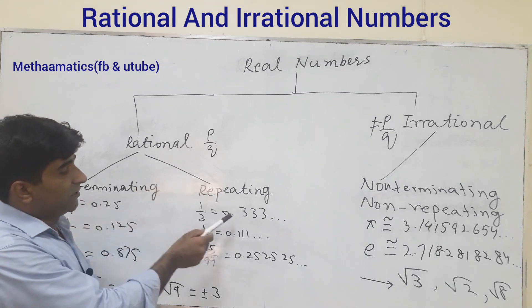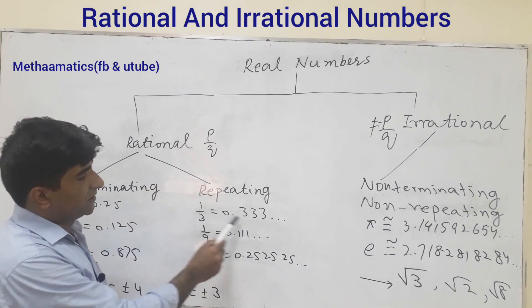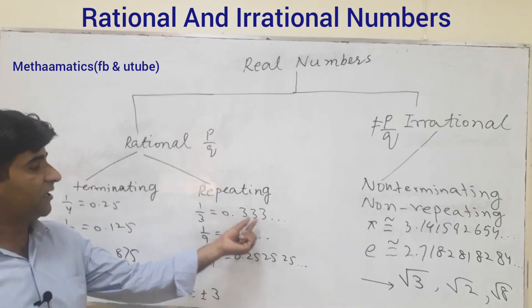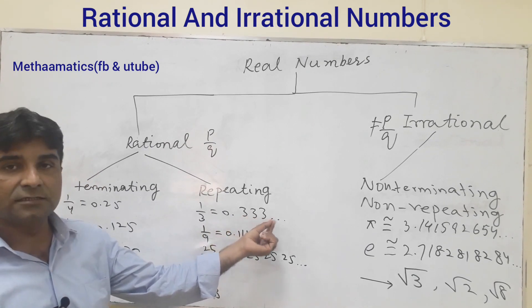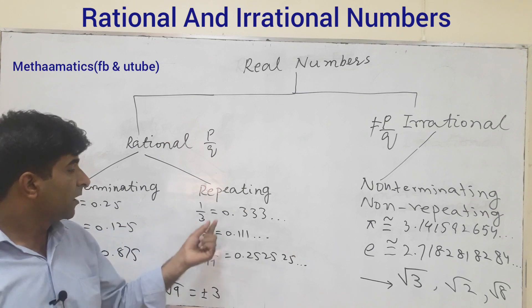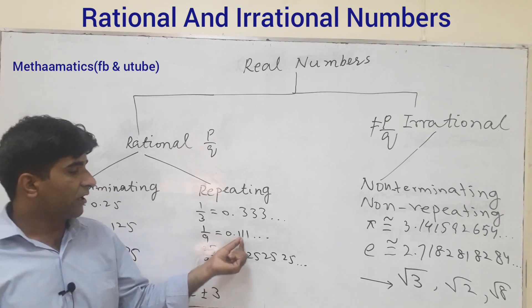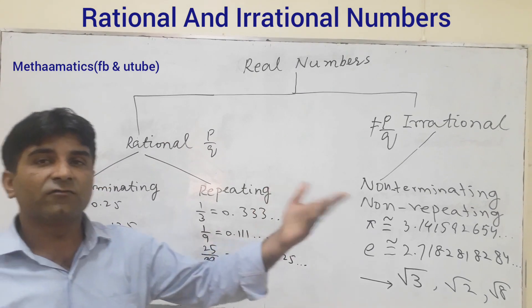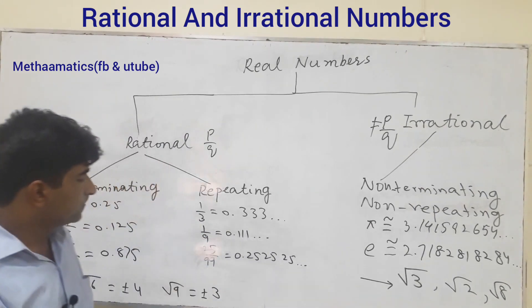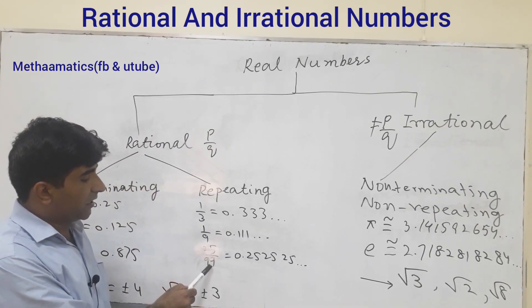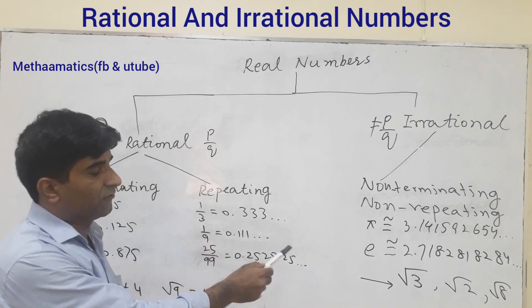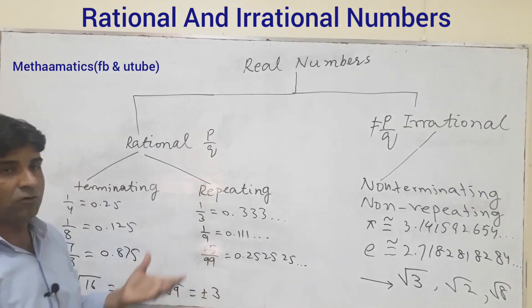And rational numbers are repeating. 1 upon 3, see here repeating block: 0.33333, it will repeat. 1 upon 9, 0.11111, it will repeat and so on. 5 upon 99, 0.252525, these have repeating blocks.